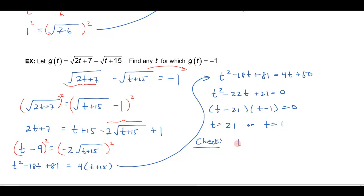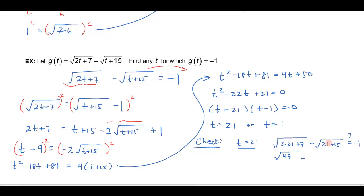If I check t equals 21, I would have the square root of 2 times 21 — that's 42, plus 7 is 49 — and then subtract the square root of 21 plus 15. Does that equal negative 1? The square root of 49 is 7, the square root of 36 is 6, and 7 minus 6 does not equal negative 1. So that one's not going to work out.